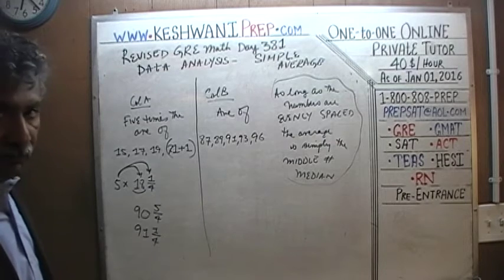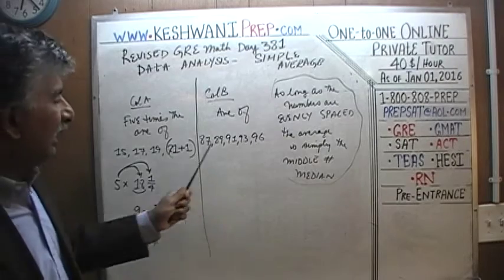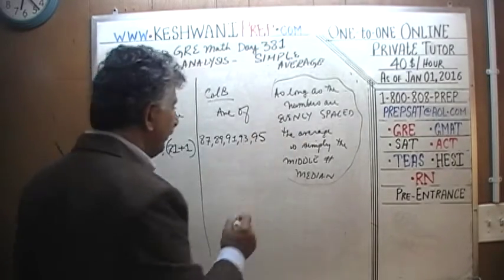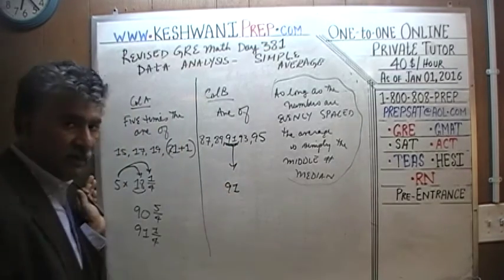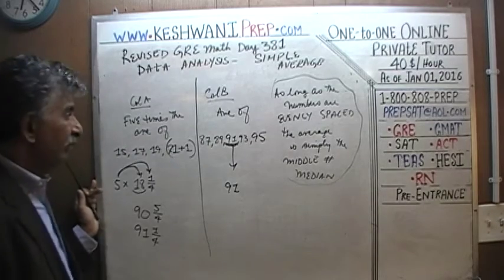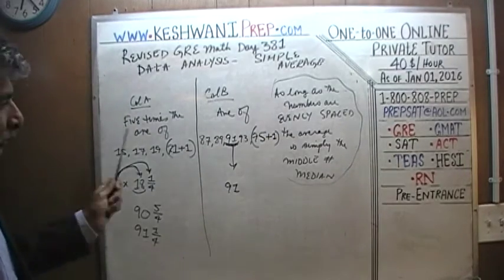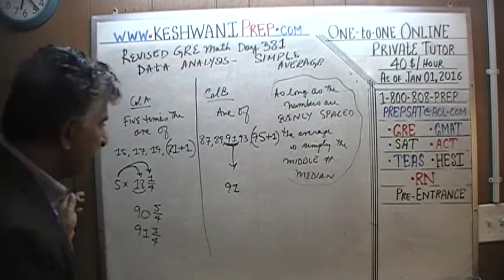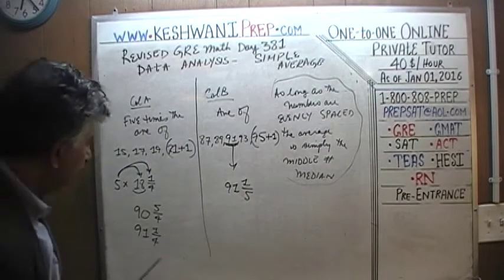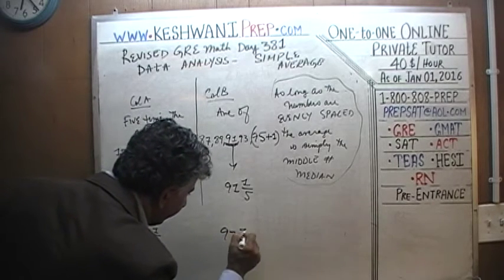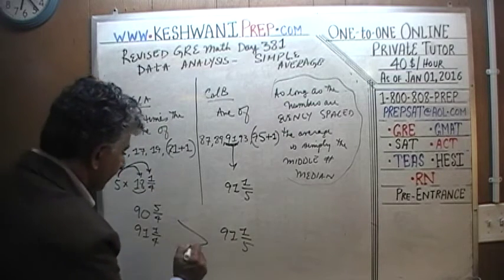For Column B: 87, 89, 91, 93 — if we had 95, the average would simply be 91. But we have 96 instead — one extra — so divide that extra 1 among 5 people. Column B equals 91 and one-fifth. So it's 91 and a quarter versus 91 and one-fifth. A quarter is more than a fifth, so the answer is Column A is greater.